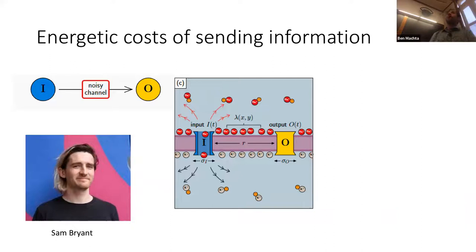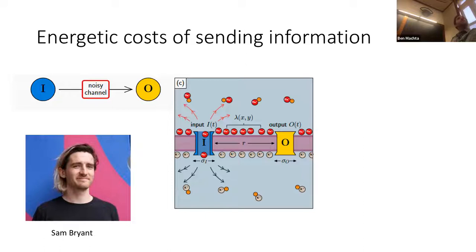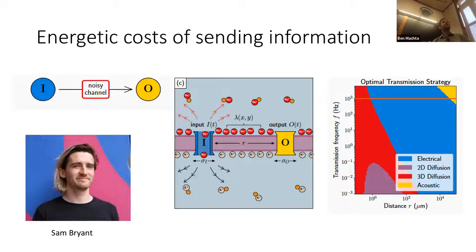More recently, Sam has been thinking about how much energy it takes to send information. Neurons communicate intracellularly using electrical signals: ion channels let currents across the membrane, signaling to distant voltage-sensitive ion channels, competing with thermal fluctuations. By thinking about this carefully we can calculate how much energy it costs to send a bit. Alternatively, cells can create particles that diffuse in the membrane or in three dimensions. Calculating these for different systems lets us determine which strategy is optimal as a function of distance and frequency, and estimate the energy required.